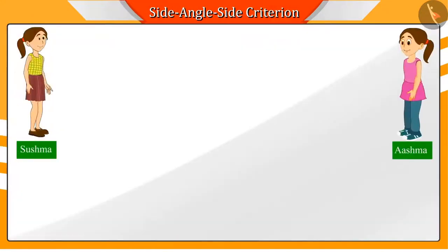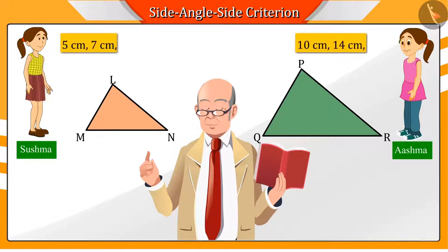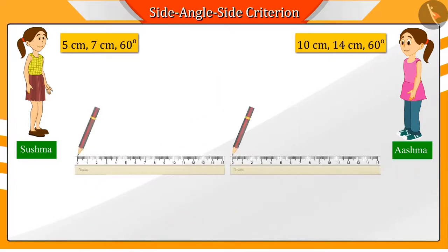Shushma and Ashma were asked to make one triangle each by their teacher, for which the teacher gave them the measurement of two sides and the angle included in them. Shushma and Ashma made their triangles using the given measurement.